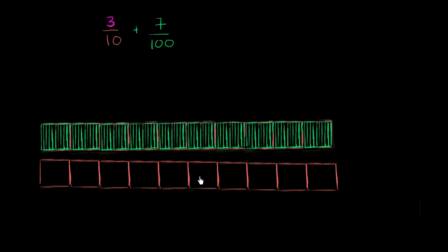1, 2, 3, 4, 5, 6, 7, 8, 9, 10. So what would 3 tenths look like? Well, it would be 1, 2, and 3 of the tenths. 3 of the tenths.